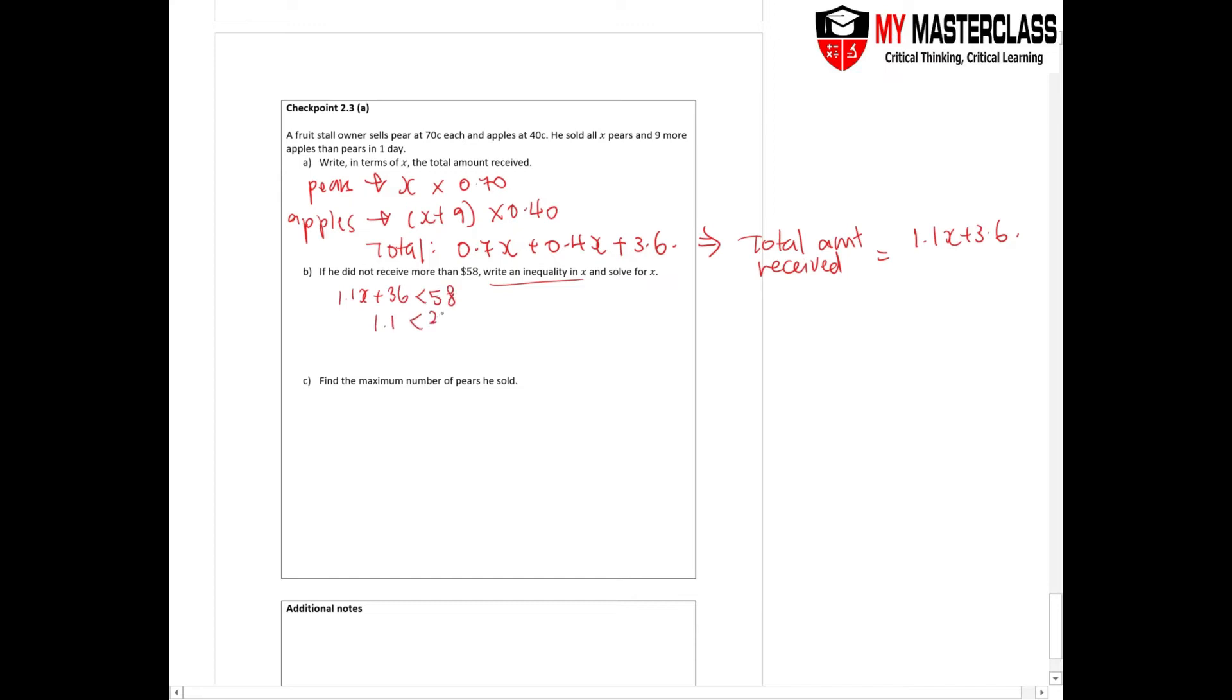Which means 1.1X equals 22.4. X equals, you divide over. This time you don't have to change sign because there is no negative. So therefore, X is less than 20.